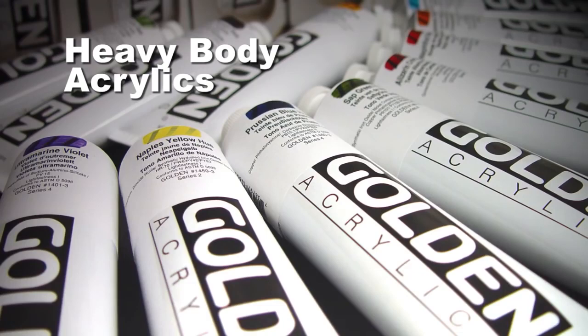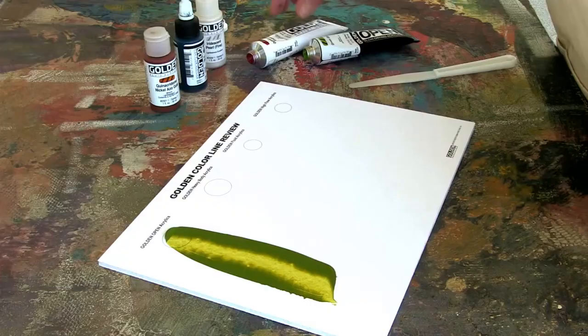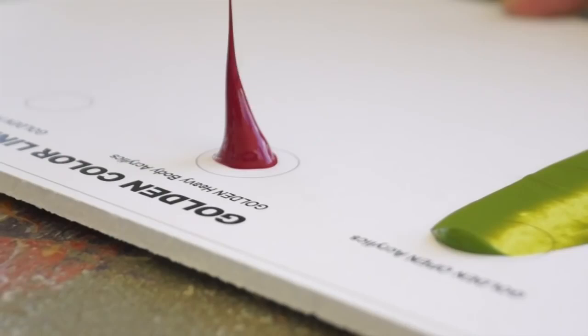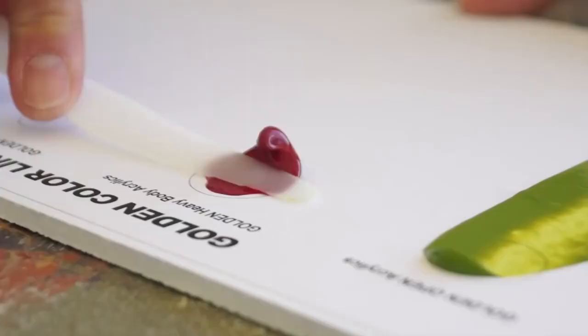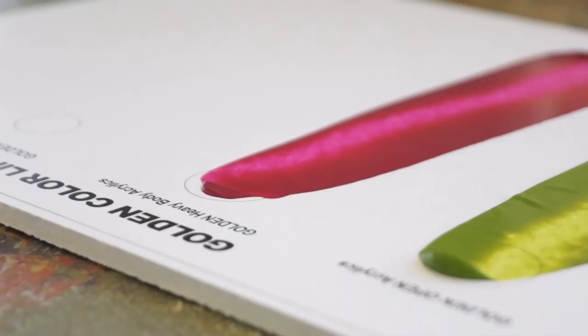Heavy body acrylics are the flagship of the Golden line offering a large assortment of pure pigments with clean color mixing and a smooth buttery consistency. They offer excellent permanency and light fastness with no fillers, extenders, opacifiers, toners, or dyes.